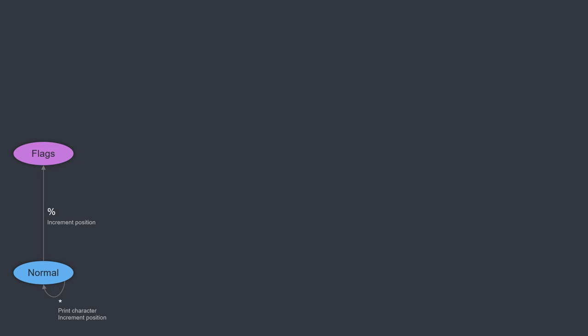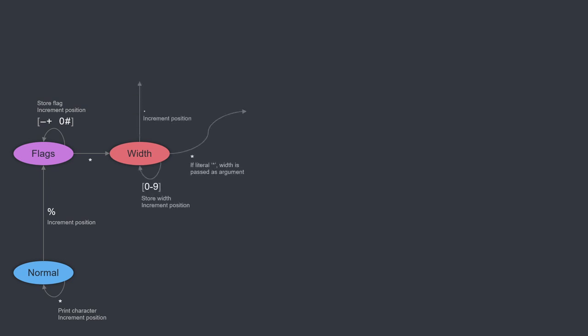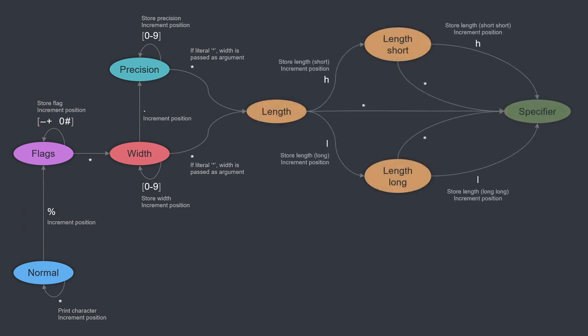The first extra state would be the flags state. We remain in this state as long as there are valid flags, so we have a recursive transition here. When we no longer encounter valid flags, we can move on to the next field, which is the width. Same as with the flags, we remain in the width state until we encounter a period or a non-numeric character. In case we encounter the period, we must transition into the precision state, where we read the precision characters. Once we encounter a non-numeric character from either the width or precision state, we jump to the length state. And from here, the states look exactly the same as in the previous example.